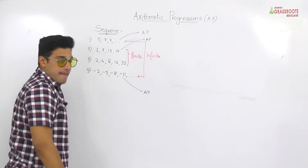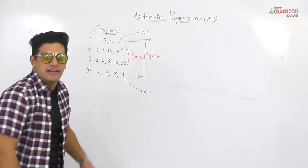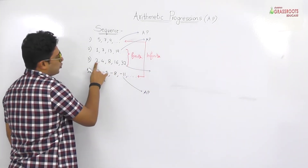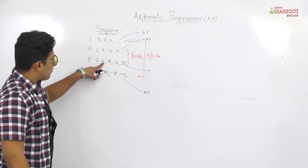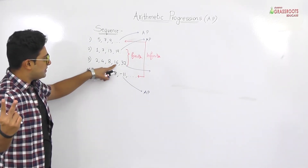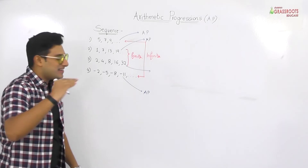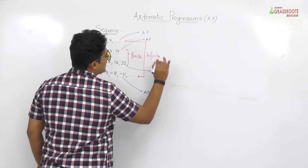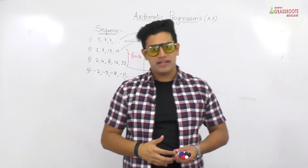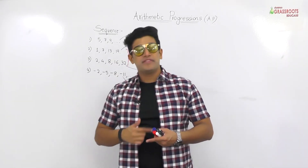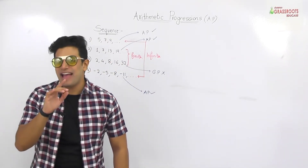These are also AP. But the third example — 2, 4, 8, 16, 32 — is also a sequence and a progression because there is a pattern. But it is not based on addition. When you divide: 4 upon 2, 8 upon 4, 16 upon 8, 32 upon 16 — when you divide, it is a constant. We call this a geometric progression, GP. That is not in our syllabus. There are also harmonic progression and arithmetico-geometric progression, but nothing else is in our syllabus. We are just going to talk about AP — arithmetic progression.